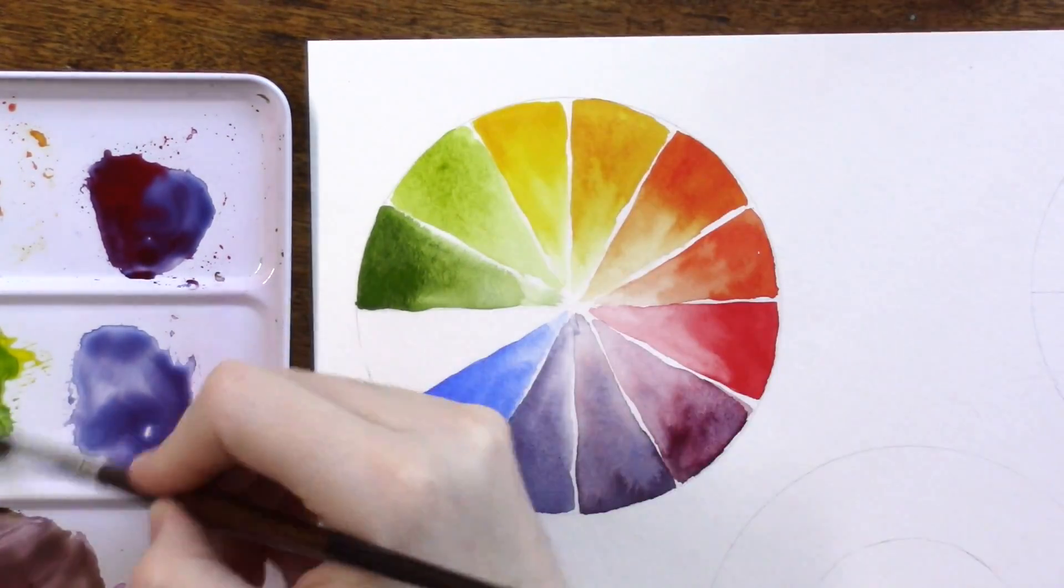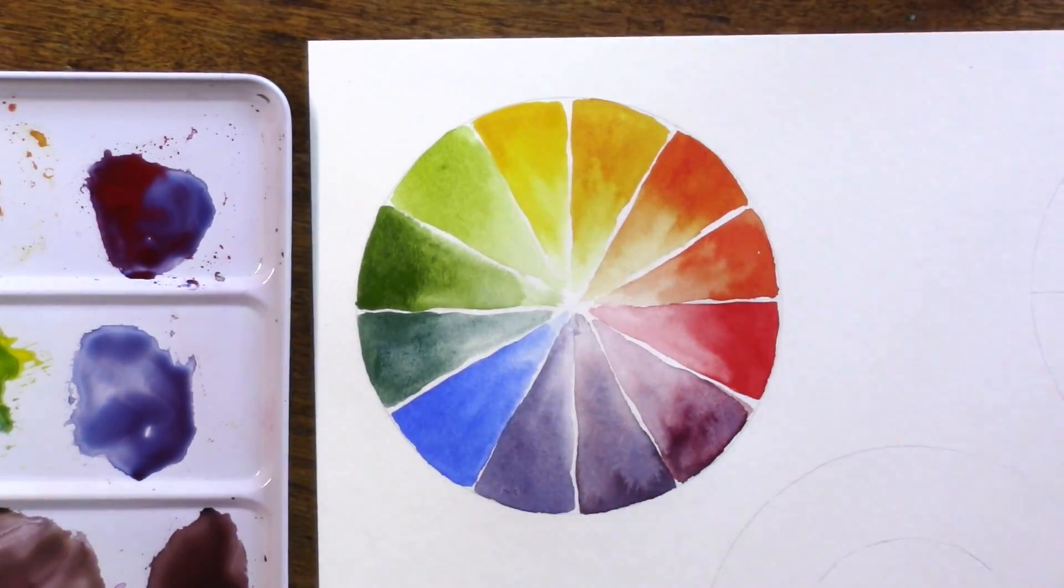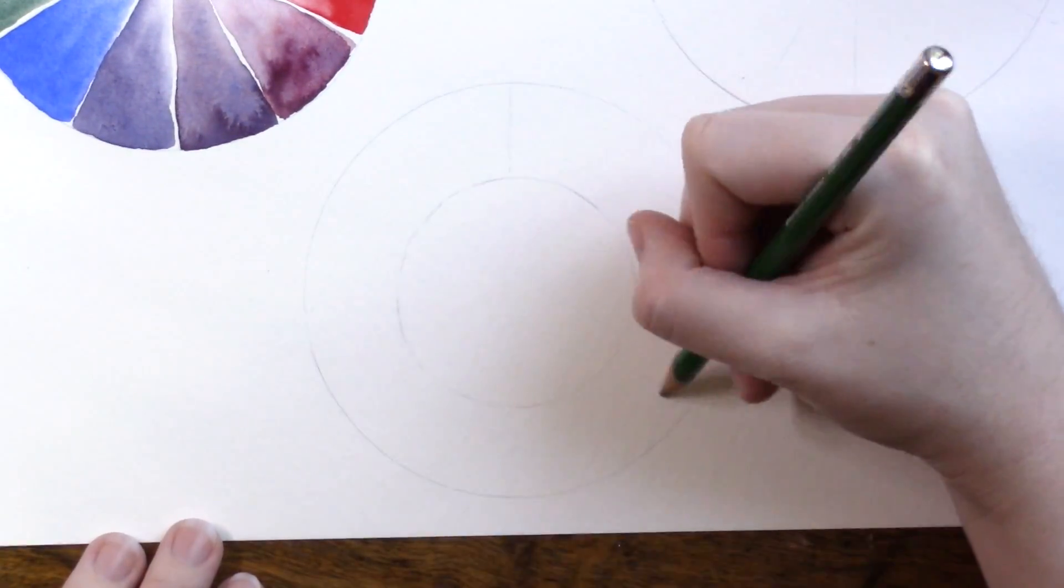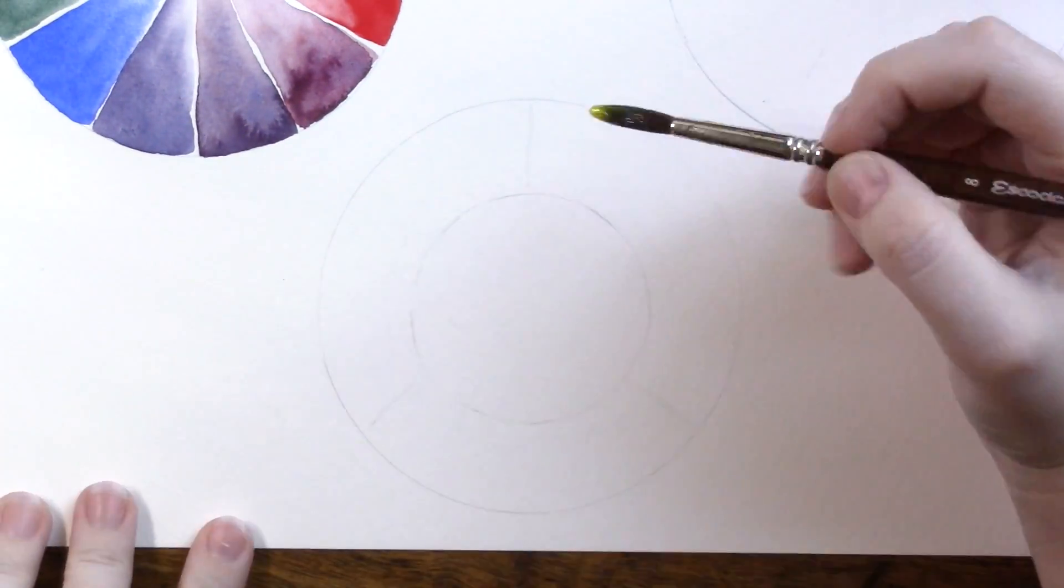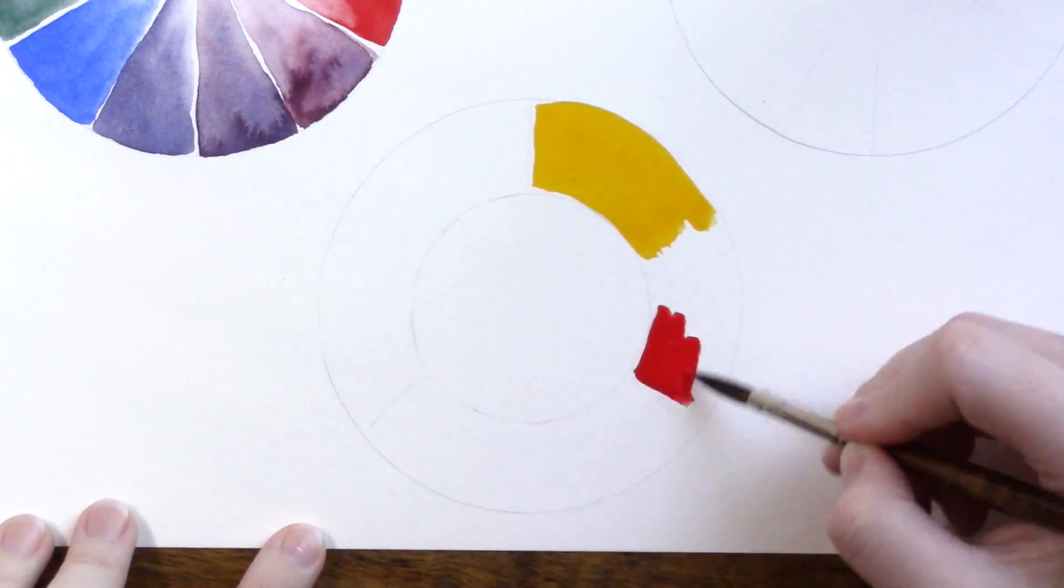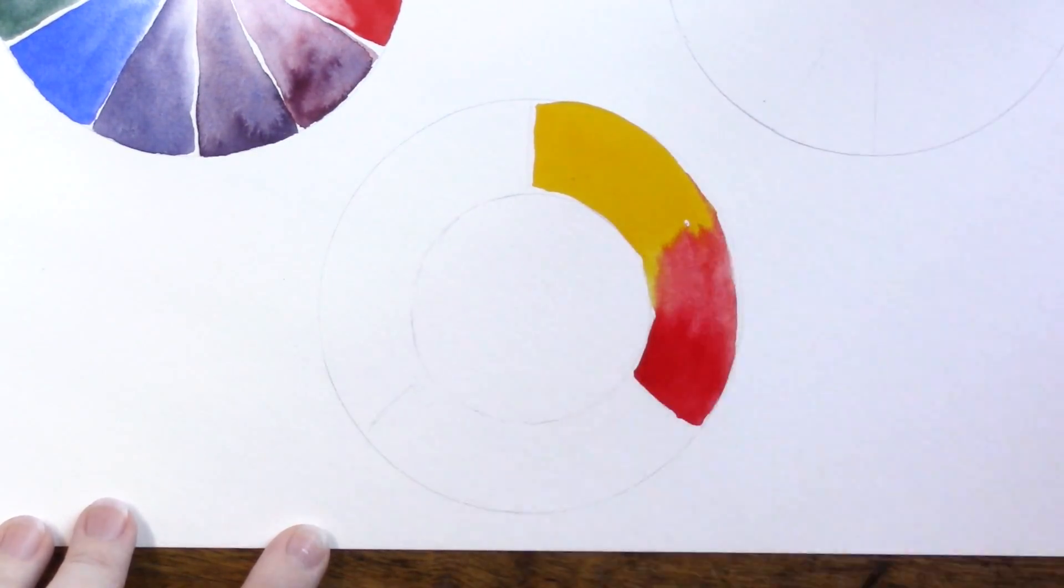We also talked about a split primary wheel where we use two of each of the primary colors and went around our color wheel that way. We mixed certain primaries together that were closer to each other on the color wheel to get the brightest secondary and tertiary colors possible.